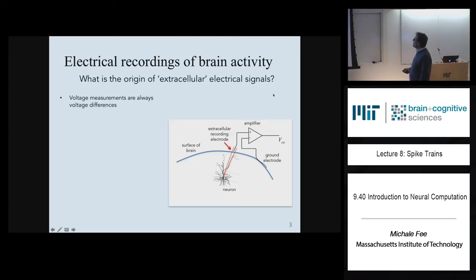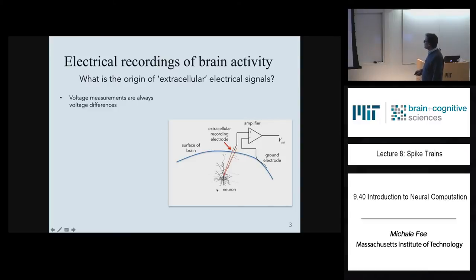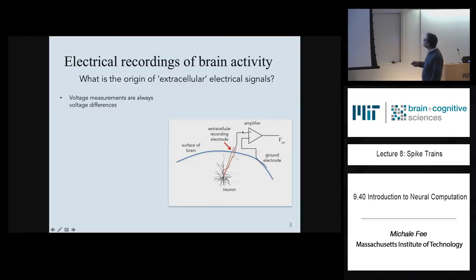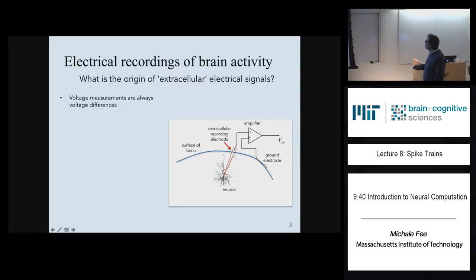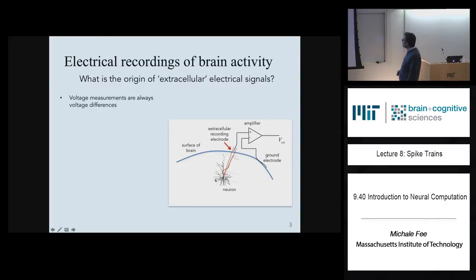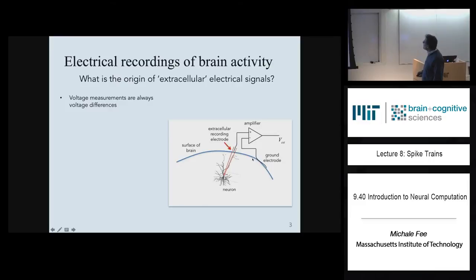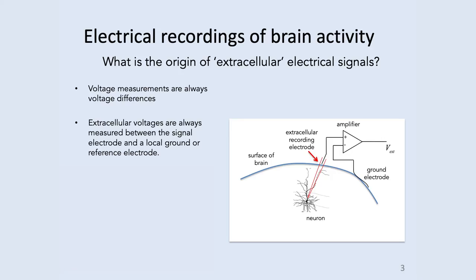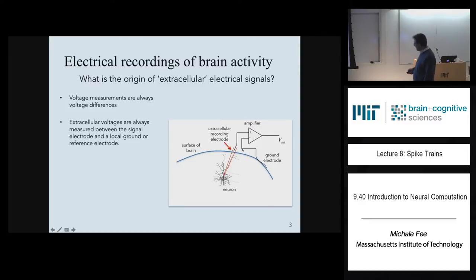When we measure voltages in the brain, we're always measuring voltage differences. When we place an electrode in the brain near a cell, we connect that electrode to an amplifier — usually a differential amplifier — that provides us with a measurement of the voltage difference between two terminals, the plus terminal and the minus terminal. We connect the electrode to the plus terminal, and we connect another electrode called the ground electrode placed some distance away or on the surface of the skull.